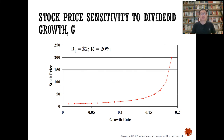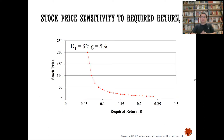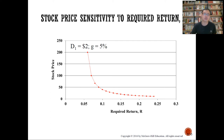Regarding stock price sensitivity: when G increases, the stock price increases exponentially. When R increases, the stock price sharply decreases at first, then more slowly — perhaps an inverse log relationship — with the rate of decline getting smaller as R continues to increase.